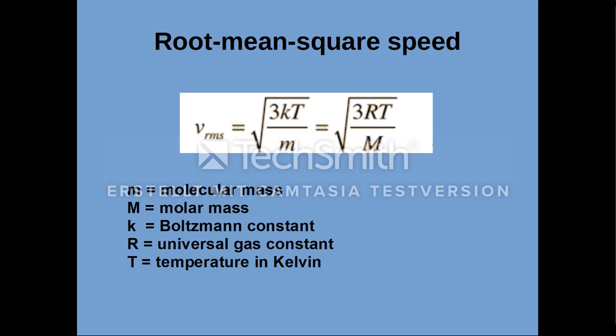The root mean square speed is the measure of the speed of particles in a gas. It is given by the following formula: the square root of 3 times the Boltzmann constant times the temperature divided by the molecular mass, or square root of 3 times the universal gas constant times the temperature divided by the molar mass.